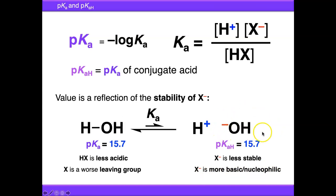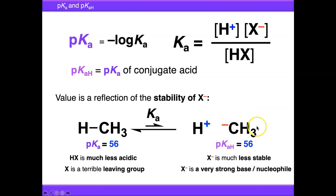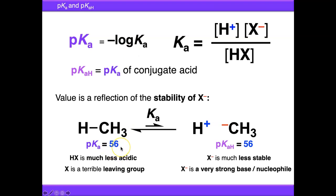Taking this to extremes: if we change X to CH₃, the right side of the equilibrium is CH₃⁻, which is a very, very unstable anion. As a result it's a very strong base and nucleophile — methyl lithium, methyl magnesium bromide, that sort of thing. This is reflected by the pKa value of methane at 56, and the pKaH value of methyl⁻ at 56 as well. Because there's a logarithm in the equation, each unit is a power of 10 — so this is effectively 56 orders of magnitude.